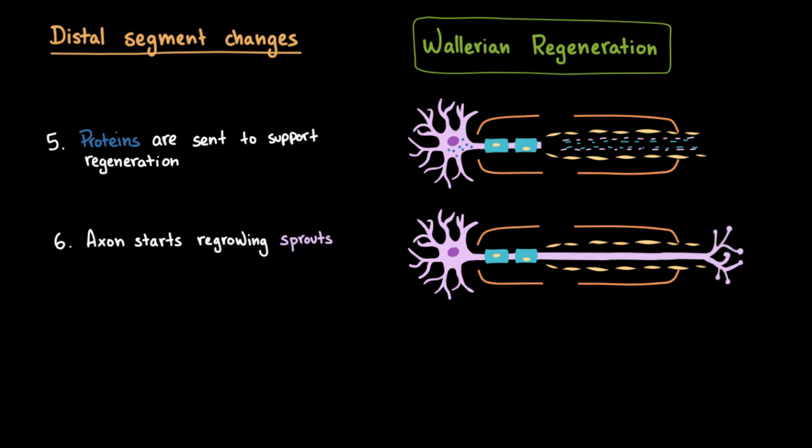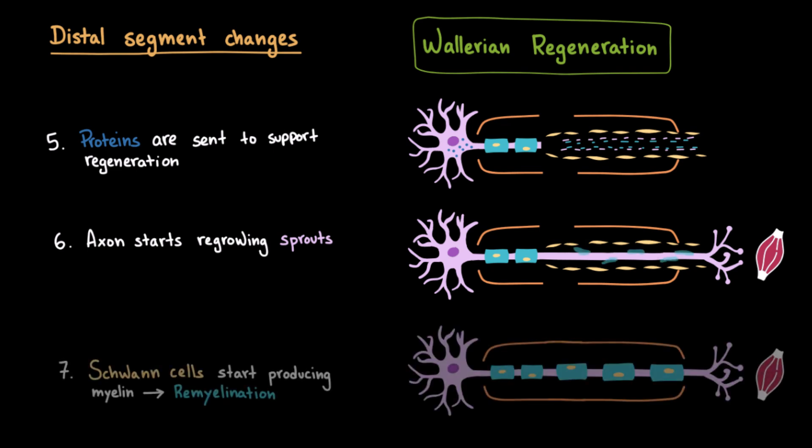These sprouts slowly extend toward their original targets, whether that's a muscle fiber or a sensory receptor in the skin. As the sprouts advance, Schwann cells wrap around them and begin producing new myelin. This re-myelination restores the ability to conduct electrical signals efficiently. If all goes well, the axon eventually reconnects with its target organ. Once the connection is re-established, the neuron gradually shifts back to its normal state. The nucleus moves back to the center, protein production stabilizes, and function is restored.